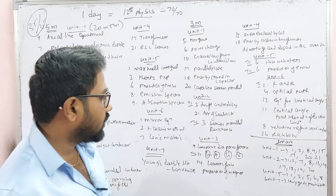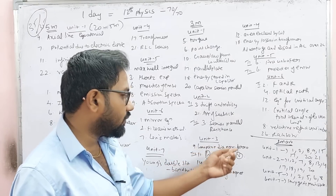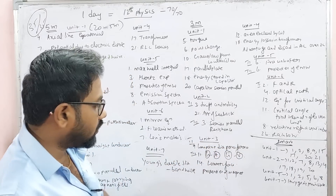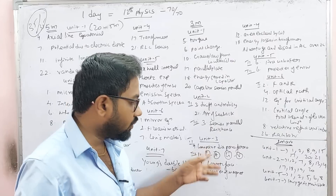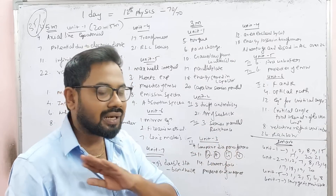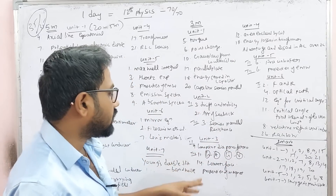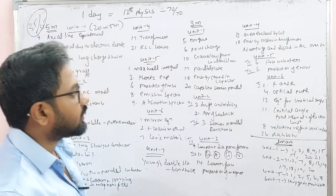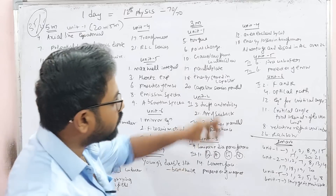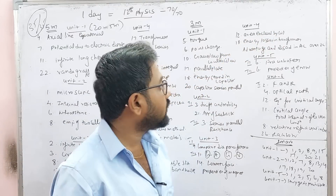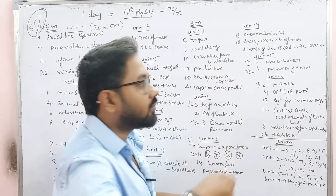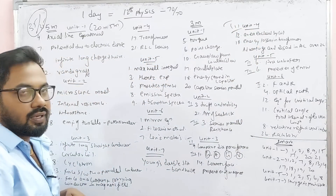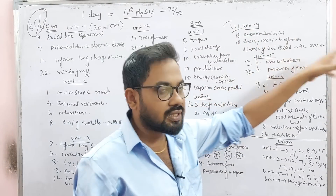Unit 3: compare diamagnetic and paramagnetic. This is the second Roman number. In the third Roman number, 11th question — Galvanometer to ammeter and Galvanometer to voltmeter. 14th question — Lorentz force. Booking properties of magnet. Unit 4: 12th question — area enclosed by coil. 18th question — this is Roman numeral 3 — energy loss in transformer, advantages and disadvantages of AC over DC.